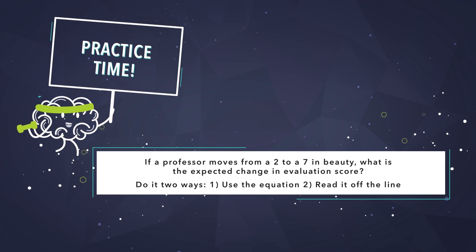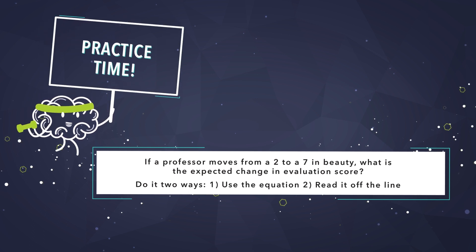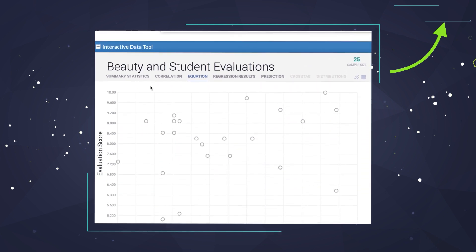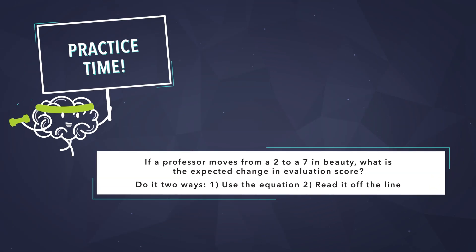That being said, let's do another example for practice, assuming that an increase in beauty does cause a higher evaluation. If a professor moves from a 2 to a 7 in beauty, what is the expected change in the evaluation score? Try doing it both ways. Come back when you've got an answer. Find the answer by clicking to see the data in this video. The link is also in the video description below. If you just want to see the answer already, hang tight.